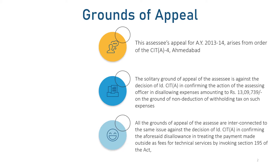This assessee's appeal for assessment year 13-14 arises from the order of CIT(A). The solitary ground of appeal of the assessee is against the decision of the learned CIT(A) in confirming the action of the Assessing Officer in disallowing expenses amounting to ₹13,09,000 on the ground of non-deduction of withholding tax on such expenses, treating the payment made outside India as fees for technical services by invoking Section 195 of the Act.